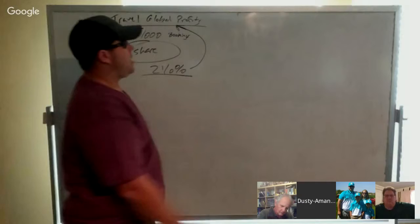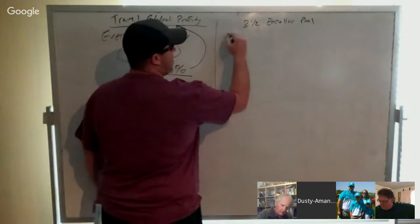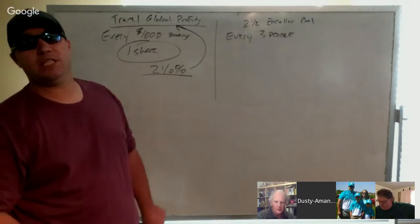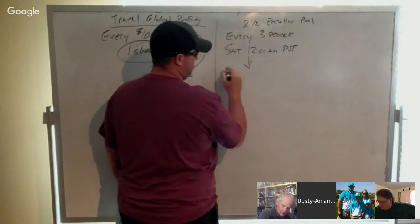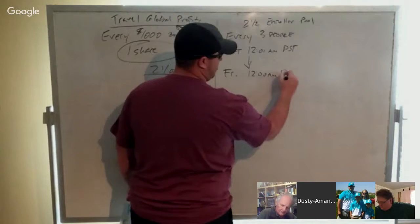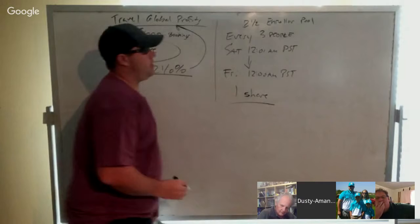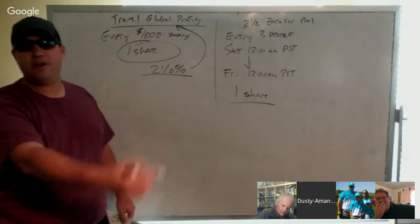Then we have a 2.5% enroller pool for the builders. So every three people in a pay week. So every three new agents you get in a pay week. And our pay week runs from Saturday morning at 12:01 a.m. Pacific time, and it goes to Friday at midnight Pacific time. So any new three agents that you personally enroll get you a share in our enroller pool. If you enroll six, you get two shares. If you enroll 30, you get 10 shares. So for every three people or every three new agents that come in, you get a piece of that pool.